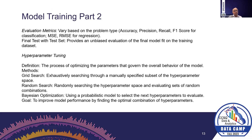Evaluation metrics are used once we build a model to assess its performance. For a classification problem, we can use accuracy, precision, recall, or F1 score — a combination of precision and recall. For a regression problem predicting a continuous value, we use MSE (mean squared error) or RMSE (root of MSE). We use the model on test data and evaluate using these metrics to decide whether the model is satisfactory for production.